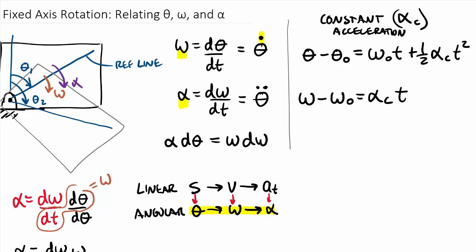And then our third equation, which is essentially derived from this bottom one here, is our omega squared minus omega naught squared. Now you can either put the one-half on this side or you can bring it over on the other side as a 2 times our alpha sub c times the change, our theta minus theta naught.